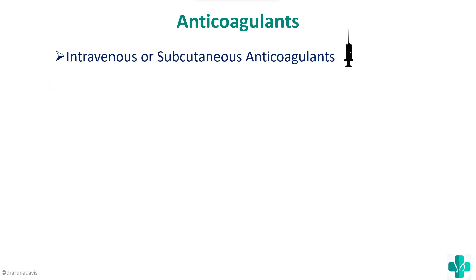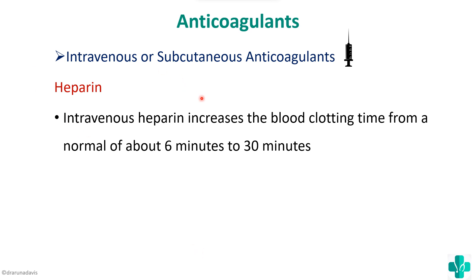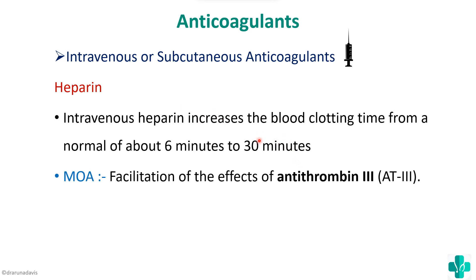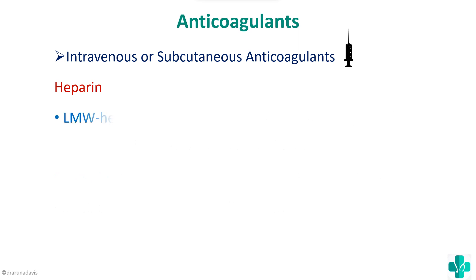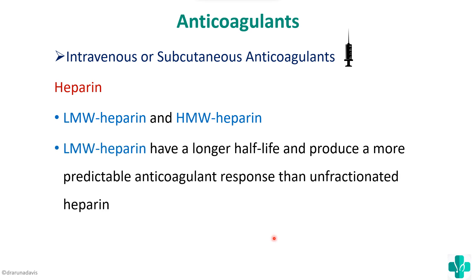Next are the intravenous or subcutaneous anticoagulants. The most important is heparin. Intravenous heparin can increase clotting time from a normal 6 minutes to around 30 minutes. Its mechanism of action is that it facilitates the effect of antithrombin 3, and together with antithrombin 3 it inactivates thrombin, factor 10, and factor 9. There are two types: low molecular weight heparin and high molecular weight heparin. Low molecular weight heparin has a longer half-life and produces a more predictable anticoagulant response, which is why it is preferred today.